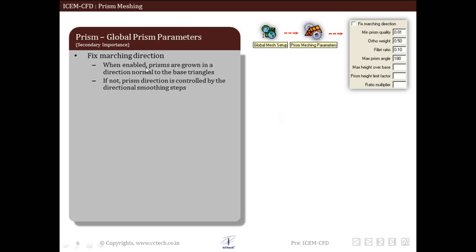First among those are fixed marching directions. Generally the direction in which prism grows is controlled by a smoothing algorithm. If fixed marching is enabled then direction of growth is calculated for only first layer and other prism layers also grow in the same direction.